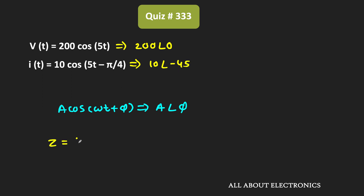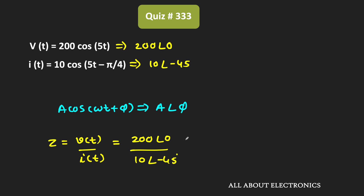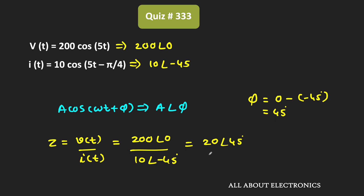That means the impedance Z, which is the ratio of the input voltage V to the current I, is equal to 200∠0° divided by 10∠-45°, which is equal to 20∠45°. So the amplitude will be equal to 20 and the phase shift will be equal to 45 degrees, because the overall phase shift is 0 minus (−45) degrees, which equals 45 degrees. That means this is the value of the impedance.